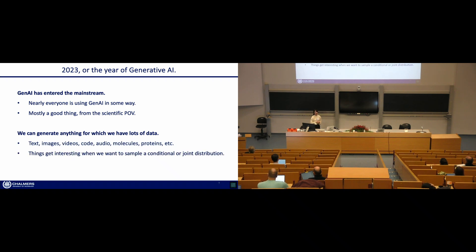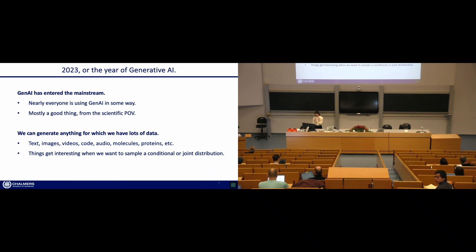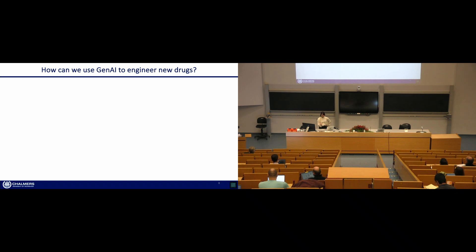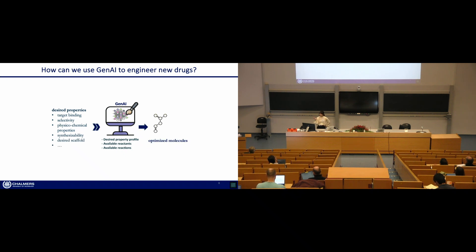We can generate anything for which we have lots of data — text, images, but more interesting to me is the generation of molecules or proteins. It's quite nice to generate any molecule or protein, but it's more interesting when we want to sample from a conditional or joint distribution. We want to generate molecules not just any molecule, but molecules that bind strongly to one particular protein target, or molecules with a specific range of physicochemical properties. We're going to focus on the use of Gen AI for different molecular generation tasks.